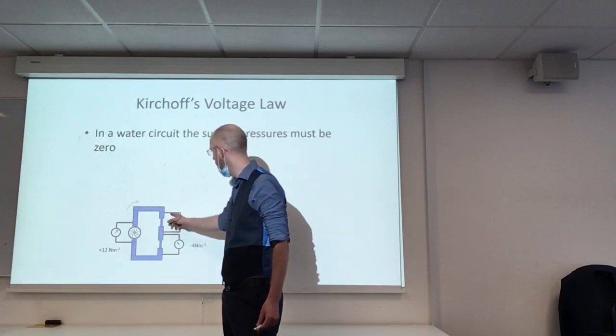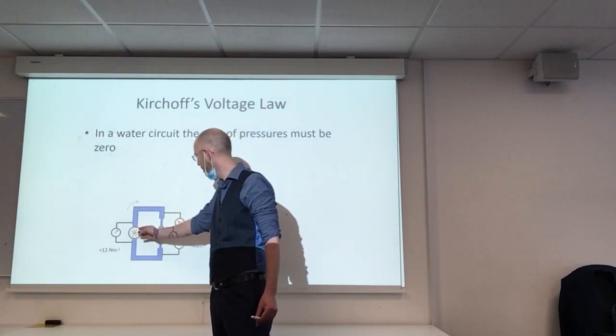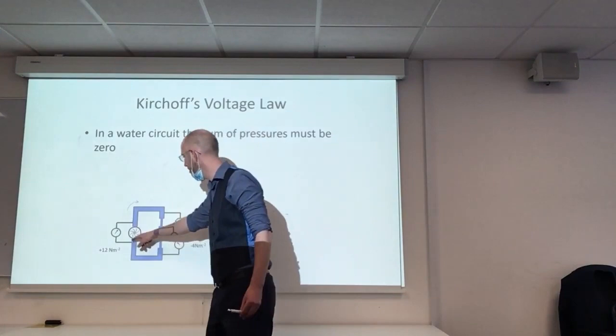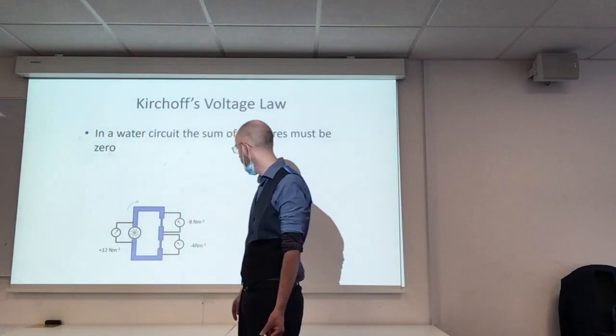So if we put in a pressure meter here and take it the same way as this one, now we've got this side is higher pressure than this side, so we've got a drop in pressure. The pump is adding some pressure; this restriction in the flow causes a drop in pressure.